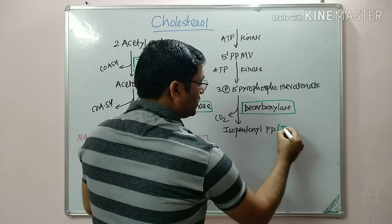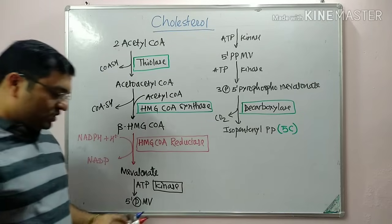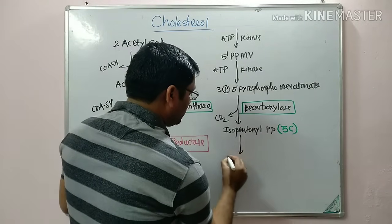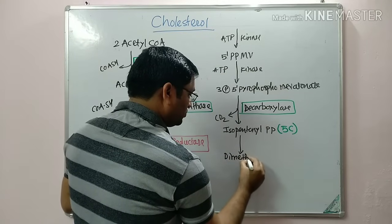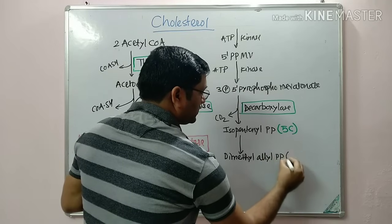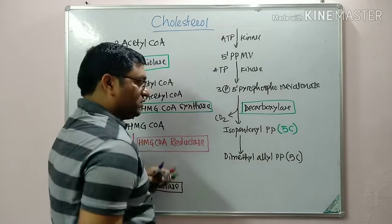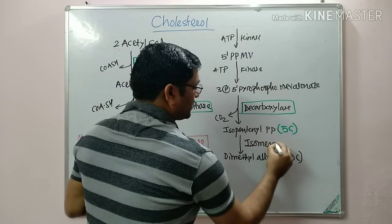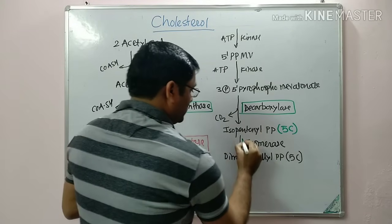This leads to the synthesis of the 5-carbon unit that is isopentenyl pyrophosphate. This is isomerized by an isomerase into dimethylallyl pyrophosphate, which is again a 5-carbon unit. This is an isomerization reaction converting isopentenyl pyrophosphate into dimethylallyl pyrophosphate.